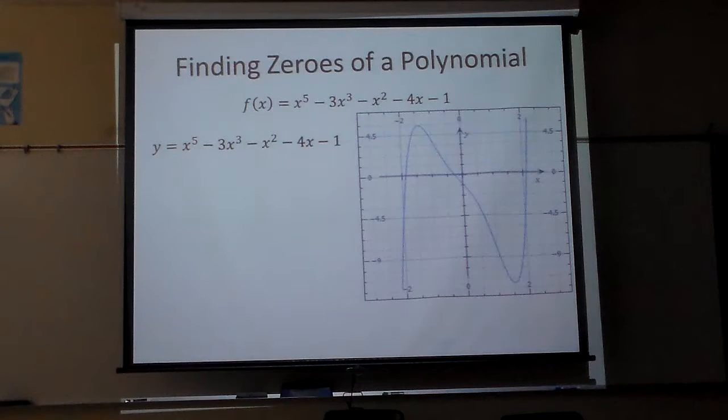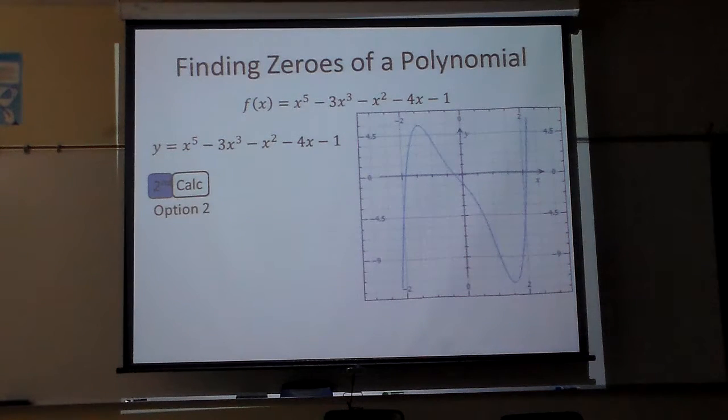Now, what we need to find is this. We're going to find the zeros. I'm going to hit second calculate on my button. And then I'm going to option 2. Second calculate, option 2.